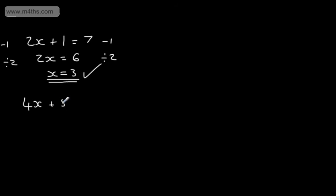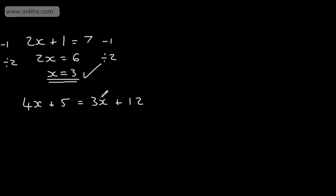4x plus 5 is equal to 3x plus 12. So this time we have an x on the left-hand side and an x on the right-hand side. The way I like to solve these is to get the x's on one side and the numbers on the other side. So using exactly the same approach as before, I'm going to subtract 3x from both sides. The reason why I'm choosing this is that we have a smaller quantity of x's.